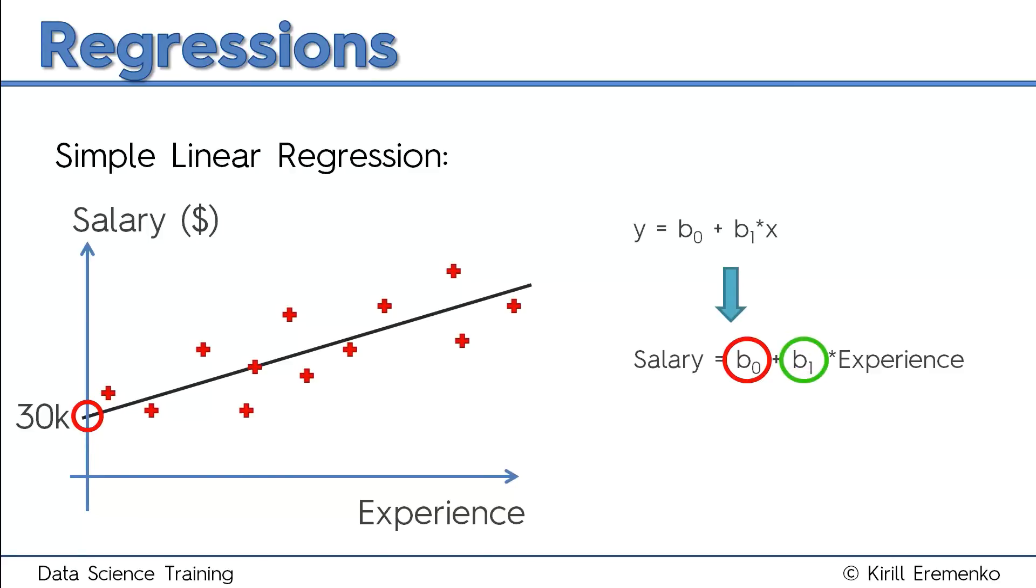Now, what is b1? b1 is the slope of the line. The steeper the line, the more money you get per extra year of experience. Let's look at this example: say somebody went from four to five years of experience. To understand how their salary increases, you project this onto the line and then onto the salary axis. You can see that for one year of experience, the person gets an extra $10,000 on top of their salary.